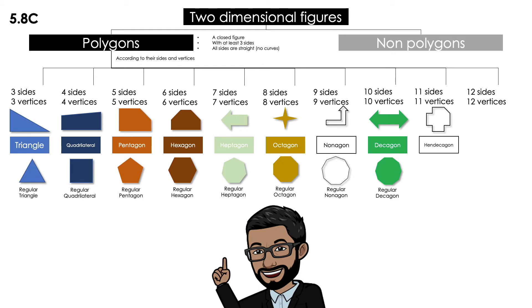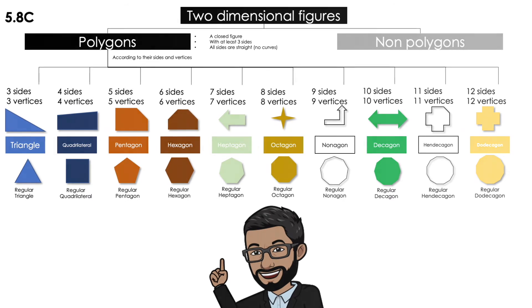This shape over here is an undecagon — that means 11 sides and vertices. If all the sides are the same, it's a regular undecagon. This cross over here is a dodecagon. That means that if all the sides and angles are the same, it's a regular dodecagon.